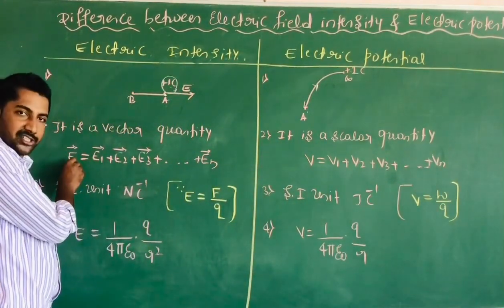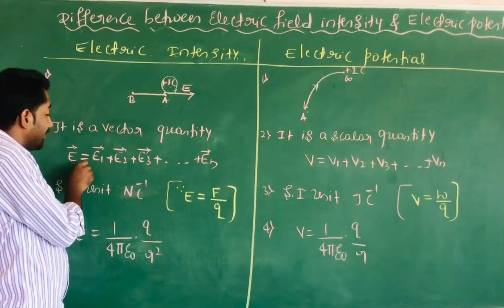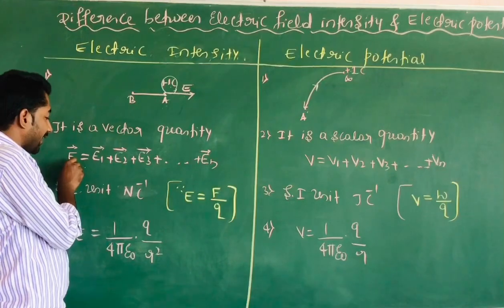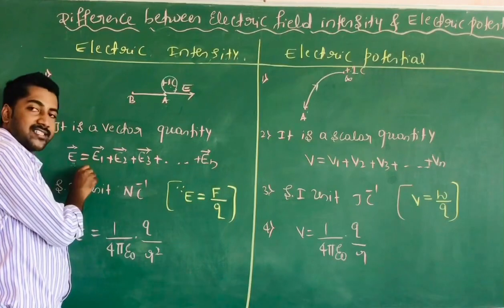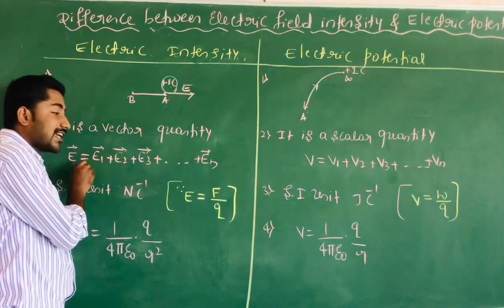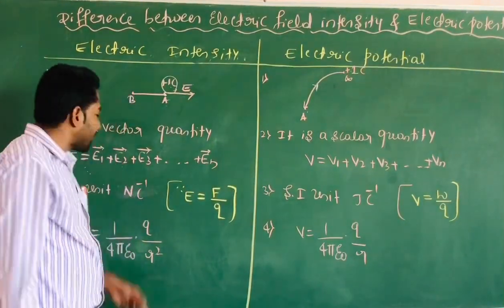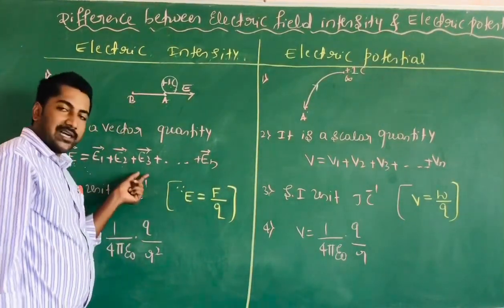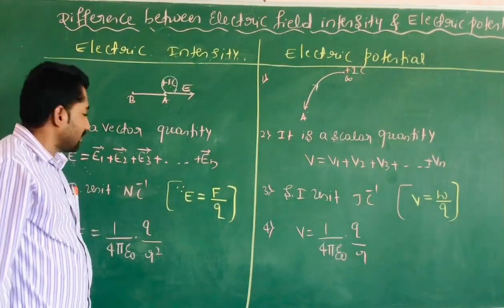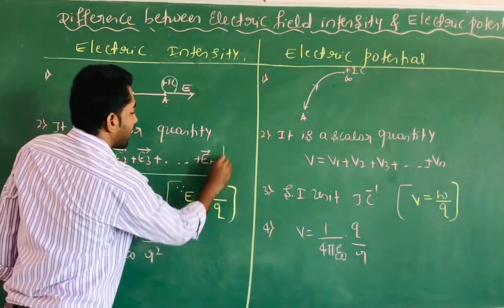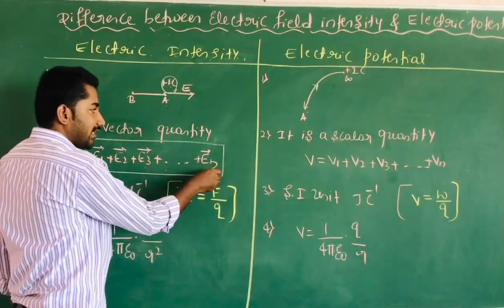The electric intensity due to the point charge at that point is equal to the algebraic sum of all the electric intensities at that point. Mathematically that equation can be written as vector E is equal to E1 plus E2 plus E3, and so on up to En.